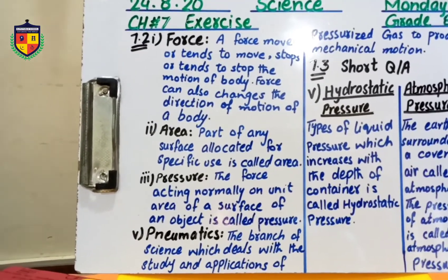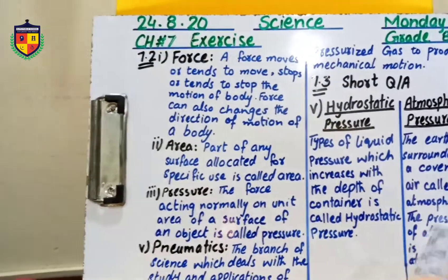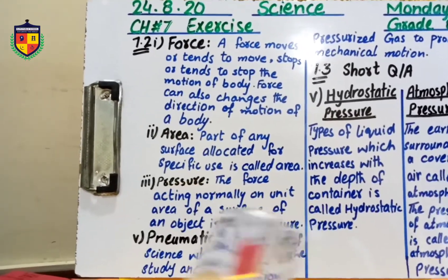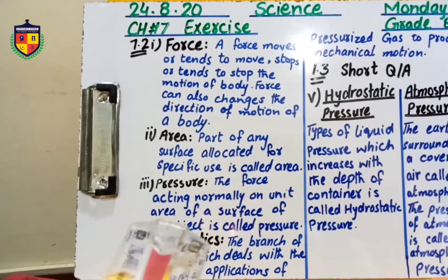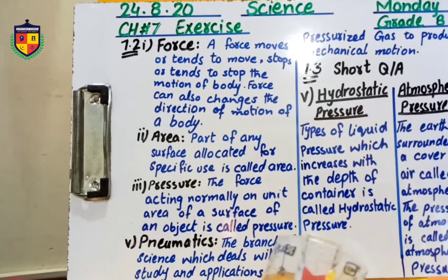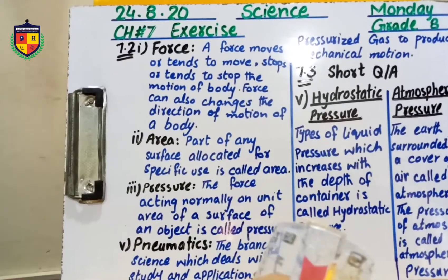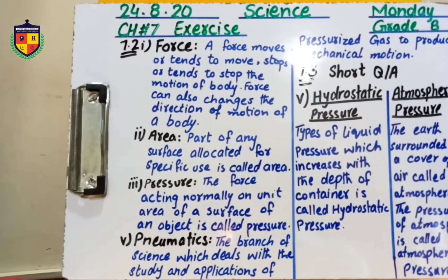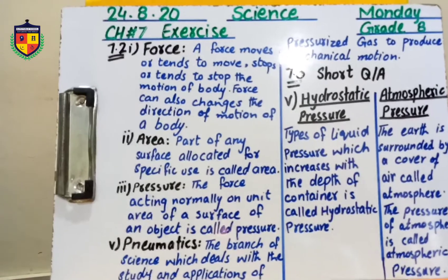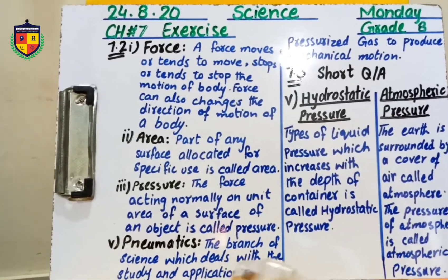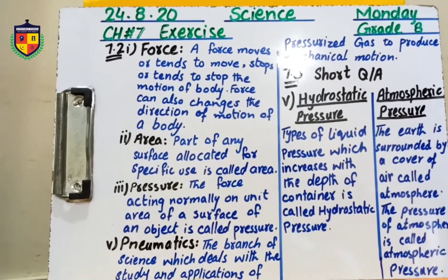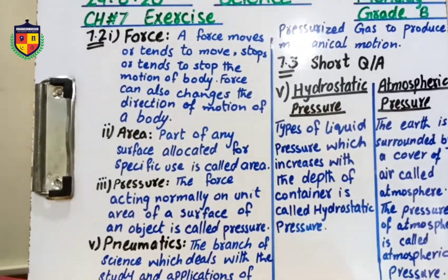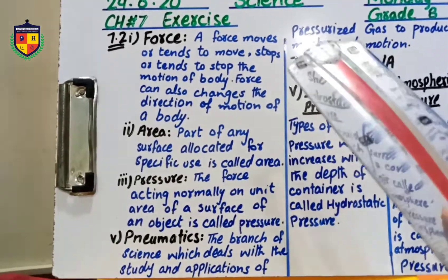For example, the specific area we are going to work on — like this board where I am writing — that is an area. Pressure: The force acting normally on the unit area of a surface of an object is called pressure. It is called Pneumatics: the branch of science which deals with the study and applications of pressurized gas to produce mechanical motion.